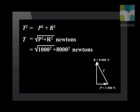T is the square root of 1000 squared plus 8000 squared. The answer is in newtons, because we are working out the tension in the cable. The tension comes out as 8062 newtons if we round off. So the tension in the cable actually increases as Andile pulls the pump to one side.